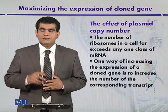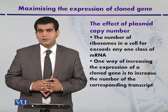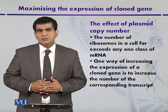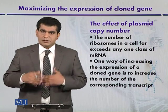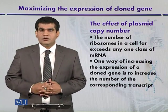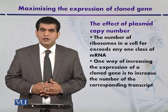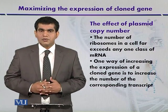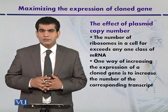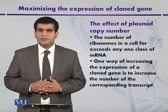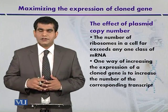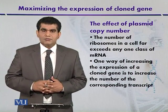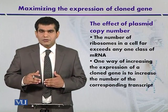There are different plasmids that can be used which have high copy number. One example is the artificially constructed PBR 322 plasmid.